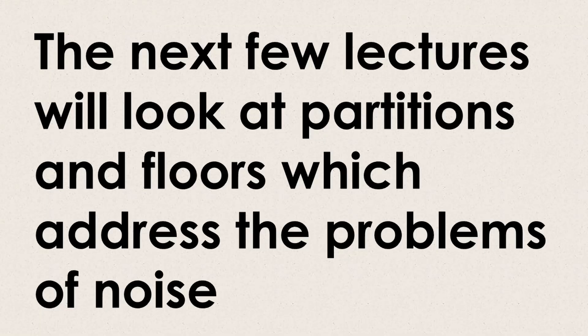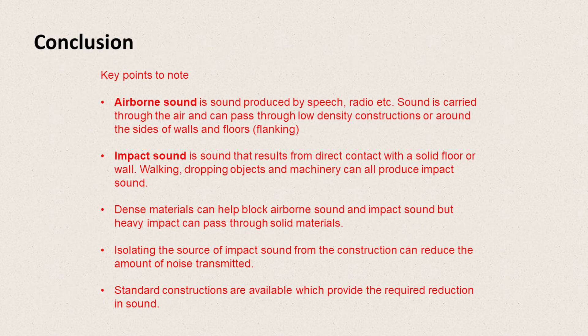The next few lectures will look at partitions and floors in particular, and the ways they can address the problems of noise. In conclusion, there are a couple of key points to note: airborne sound is produced by speech, radio, etc., carried through the air and able to pass through low-density constructions or around the sides of walls and floors. Impact sound results from direct contact with a solid floor or wall — walking, dropping objects, and machinery can all produce it. Dense materials can help block both airborne and impact sound, but heavy impact can pass through solid materials. Isolating the source of impact sound from the construction can reduce the noise transmitted, and standard constructions are available which provide the required reduction in sound.